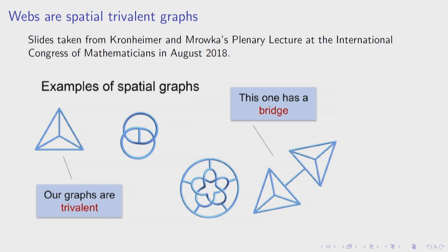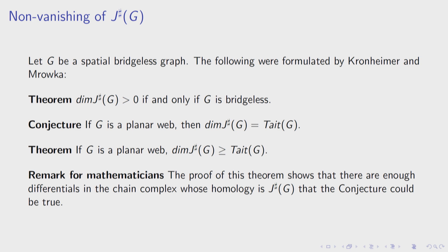These are trivalent graphs. Here's a graph with a bridge, and these graphs here are bridgeless. Their theorem states that if you have a bridgeless graph, then the dimension of the space is positive. They conjecture that for a planar graph — which they call a web, meaning a spatial graph — the number of Tait colorings equals the dimension of this invariant. In 2017, they showed that the dimension is greater than or equal to the number of Tait colorings, giving some evidence for this conjecture, though it's in the wrong direction for proving the four-color theorem — you'd like to prove the opposite inequality.